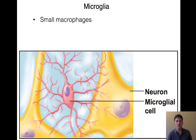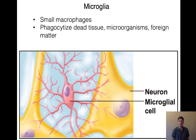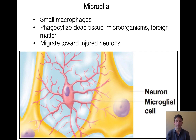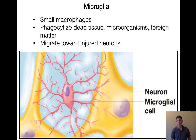Our microglia are very small macrophages — they're going to gobble up any debris or pathogens, phagocytizing dead tissue and looking for anything that's not supposed to be there. During injury, these microglia will migrate to phagocytize any dead material or anything that's foreign.